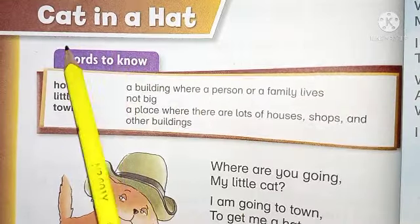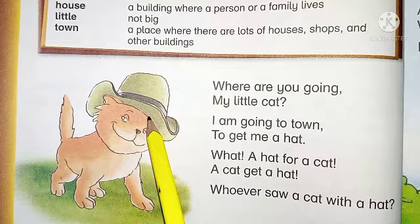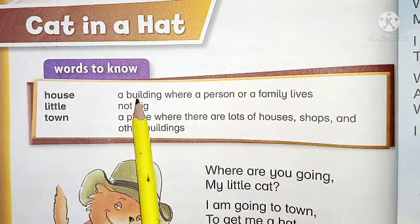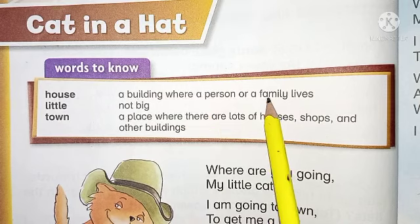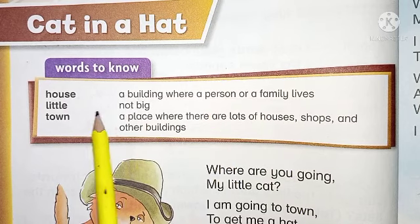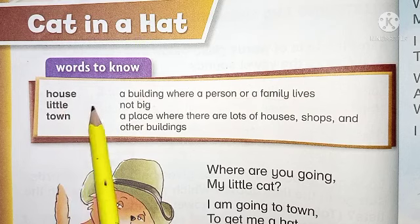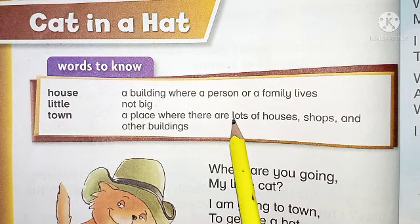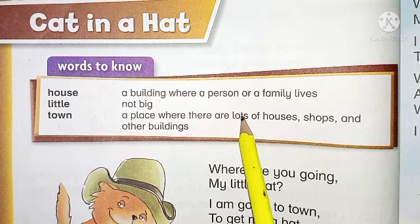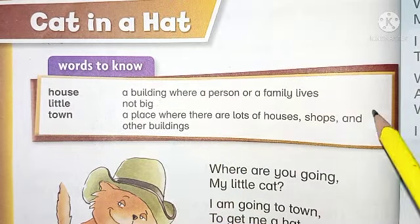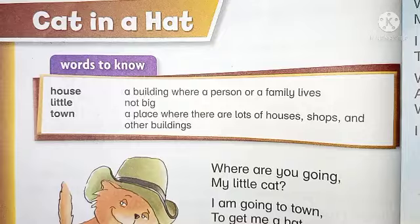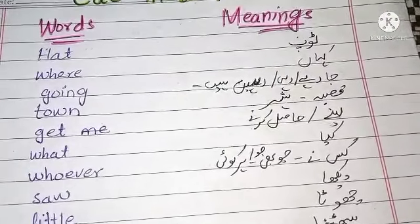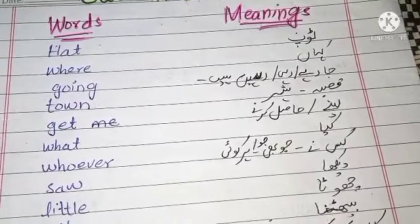Cat in a Hat — words to know. House: a building where a person or a family lives. Little: not big. Town: a place where there are lots of houses, shops and other buildings. You can note words and meanings from here. Hat: a top worn on the head.